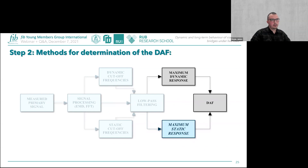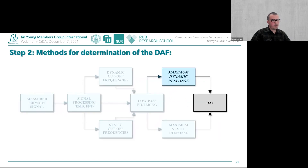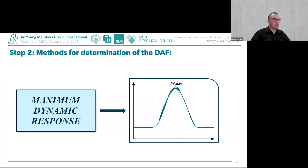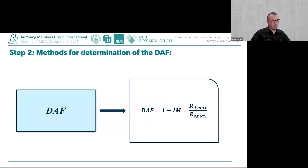To obtain the maximum static response, the dynamic signal is filtered with a low-pass filter that blocks all frequencies above the static cutoff frequency, and the peak of the filtered response is taken as the maximum static response. For the maximum dynamic response, the raw signal is first filtered to remove noise, and the peak value is used. The DAF is then calculated as the ratio between the maximum dynamic and static response values.